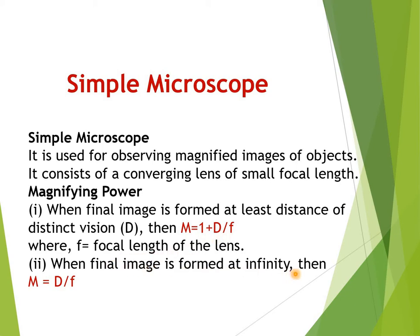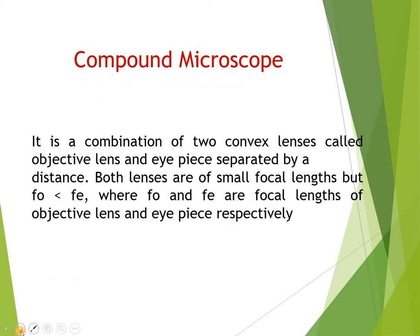When the final image is formed at infinity, the magnifying power is D upon F. So the simple microscope is just a converging lens of short focal length. The expression for magnifying power confirms: shorter the focal length, greater the magnifying power.